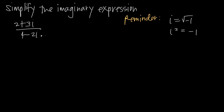With these two things in mind, we can use conjugate method to simplify this expression. When we say simplify, primarily what we're trying to do is get the imaginary number out of the denominator — in the same way that you rationalize a denominator to get a square root out. You never want to leave a final answer with an imaginary number in the denominator, so we're going to try to remove this i in the denominator using conjugate method.